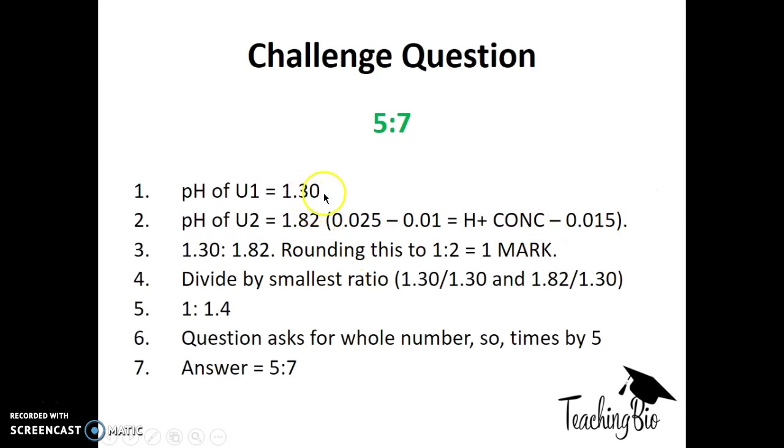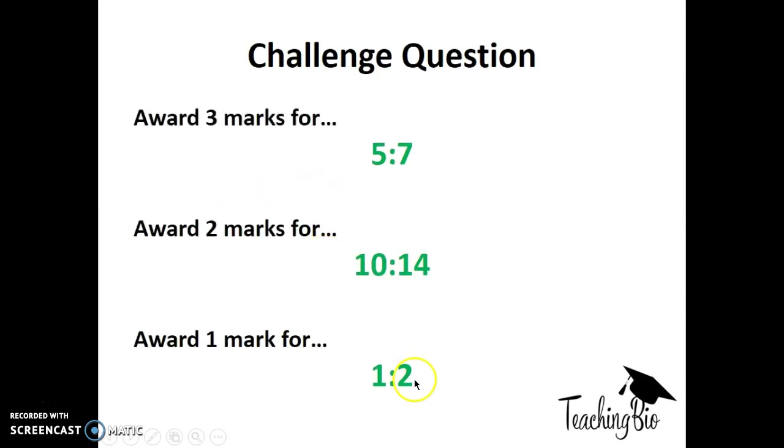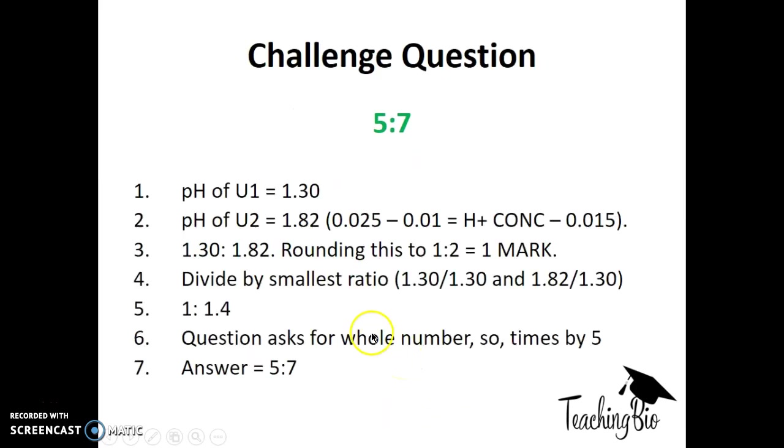The ratio is 1.30 to 1.82. Some of you may just round that to 1 to 2, which gives you 1 mark. However, if you want the accurate ratio, divide these ratios by the smallest one. Whenever you get a ratio question, always do this. Divide by the smallest ratio. Here the smallest is 1.30. So 1.30 divided by 1.30 and 1.82 divided by 1.30 gives a ratio of 1 to 1.4.